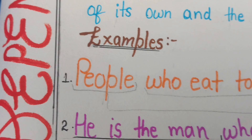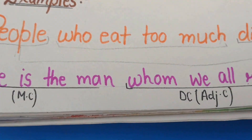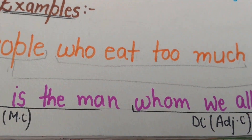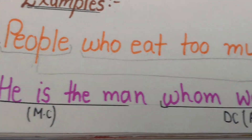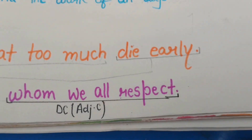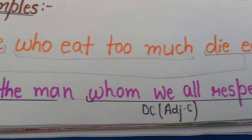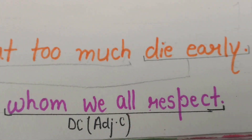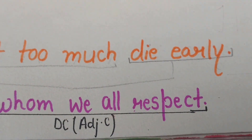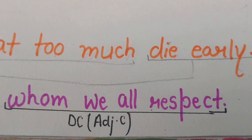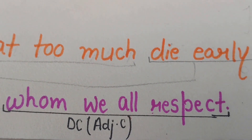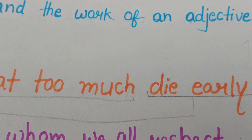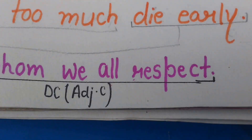Let us talk about another example of an adjective clause: 'He is a man whom we all respect.' In this, 'he is a man' is the main clause and 'whom we all respect' is the dependent clause, depending on the main clause, 'he is a man.'